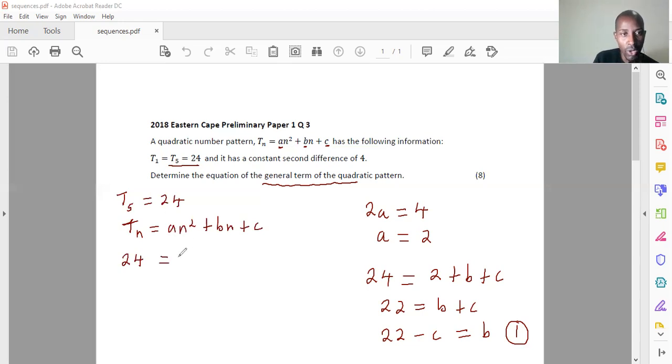And then a, I know you already, you are 2. n is the position, 5 squared plus b, which I don't know. n is the position in this case, is going to be equal to 5 again, then plus c. The maths will suggest I get a 50 here, I get 24, I get plus 5b plus c. I get negative 26 when I take 50 to the other side, is equal to 5b plus c.